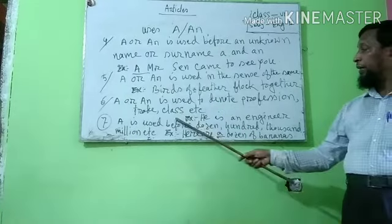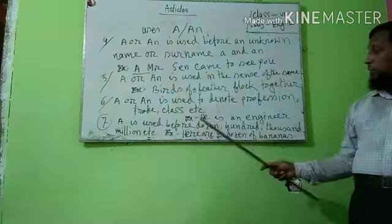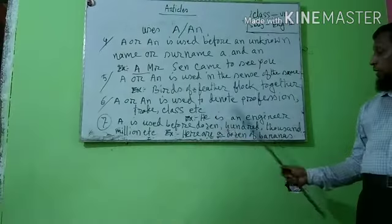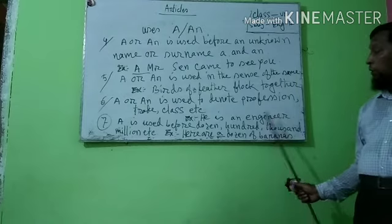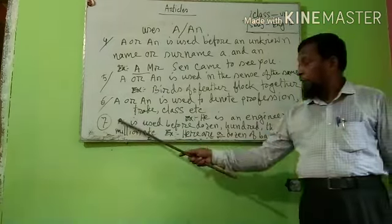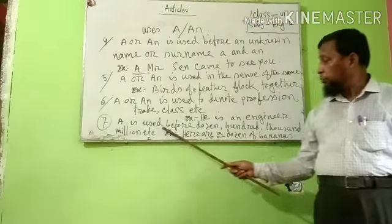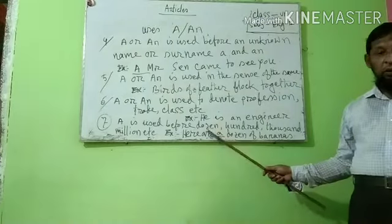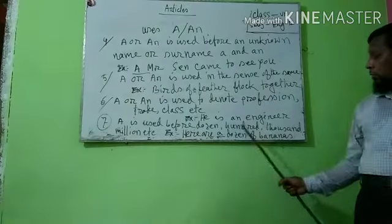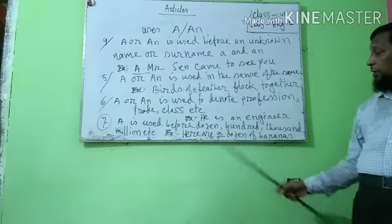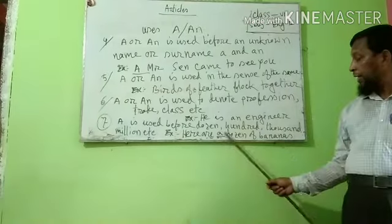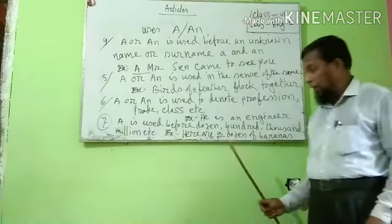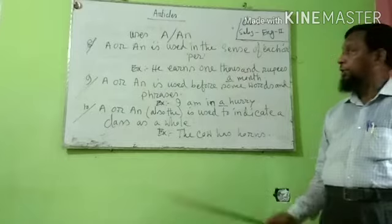Number six: A or AN is used to denote a profession, trade, or class. Example: He is an engineer — that means a professional. Number seven: A is used before dozen, hundred, thousand, million, etc. Example: Here are a dozen bananas.